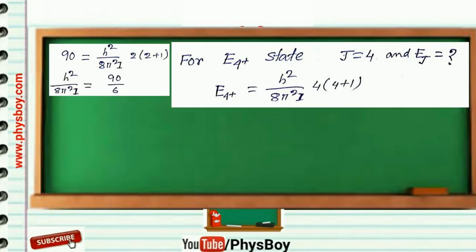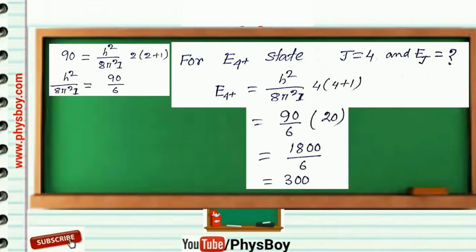E4+ = h²/(8π²I) times 4(4+1), where 4 is the value of j. And we know the value of h²/(8π²I) is equal to 90/6.